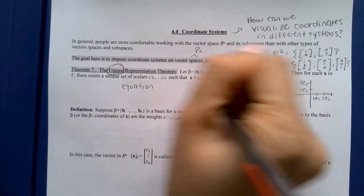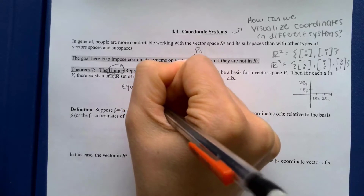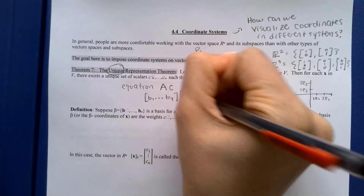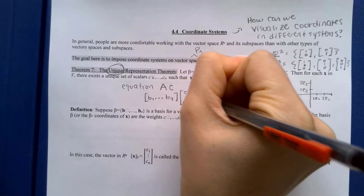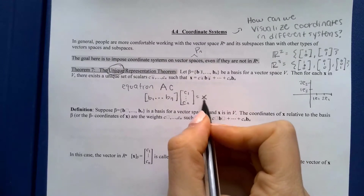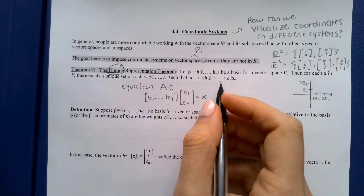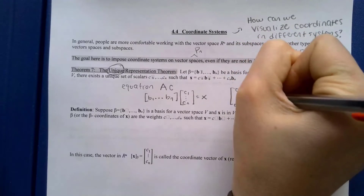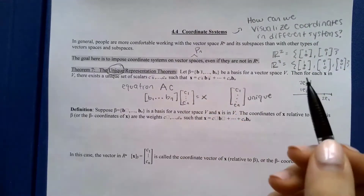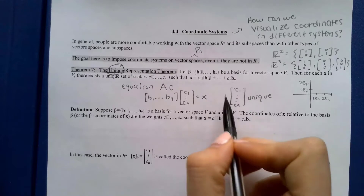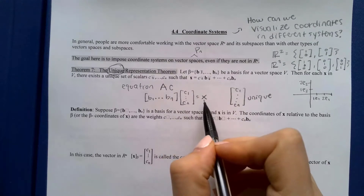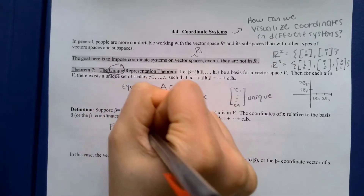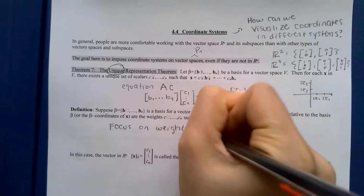With a pivot in every column, there is either no solution — meaning the vector is outside the vector space — or a unique way to make that x. So in equation form we think about Ac = x, where A is the matrix containing all basis vectors b1 through bn, c is the vector of coefficients c1 through cn, and x is the vector we're looking for. The uniqueness of c comes from linear independence — that is also what it means to be one-to-one.